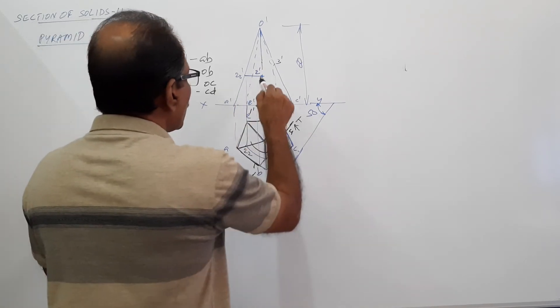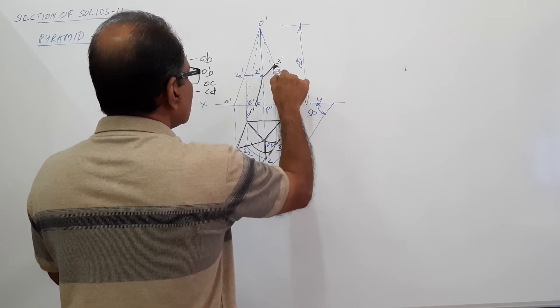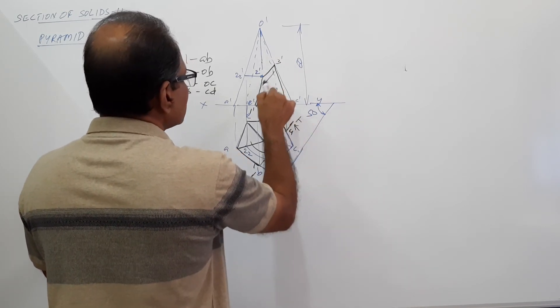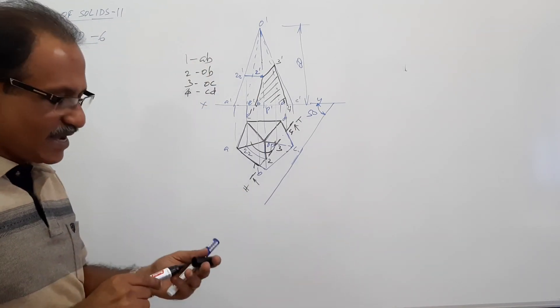Now connect. Connect what? 1 dash, 2 dash, 2 dash, 3 dash, 3 dash, 4 dash, and H. What is it? That is the sectional elevation.